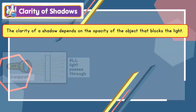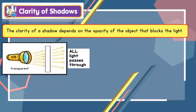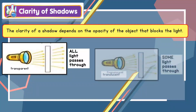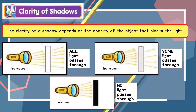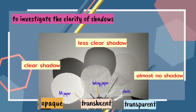Clarity of Shadows — Kejelasan bayang-bayang. The clarity of a shadow depends on the opacity of the object that blocks the light. When the object is transparent, it allows all the light to pass through. A translucent object allows some light to pass through. However, an opaque object does not allow the light to pass through. Let's look at this activity to investigate the clarity of shadow. Here I use three types of materials: for paper is opaque, baking paper is translucent, and plastic is transparent. Look at the result of the shadow.